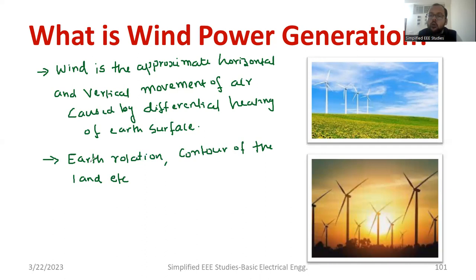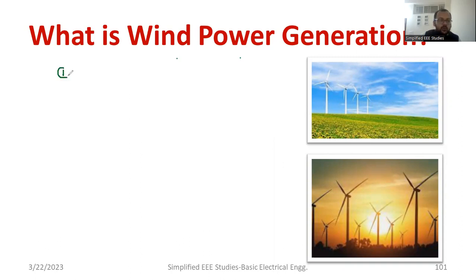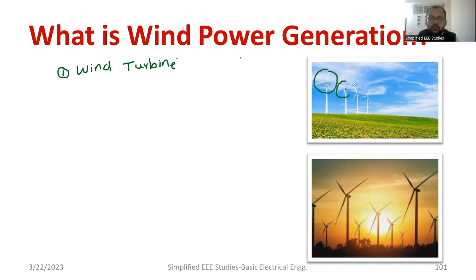Now let us discuss how to produce electricity from wind. In order to produce electricity from wind, we require a wind energy power conversion system. The first component is called the wind turbine. There are different varieties of turbines available. You can see the wind turbines here in the diagram I have put up.